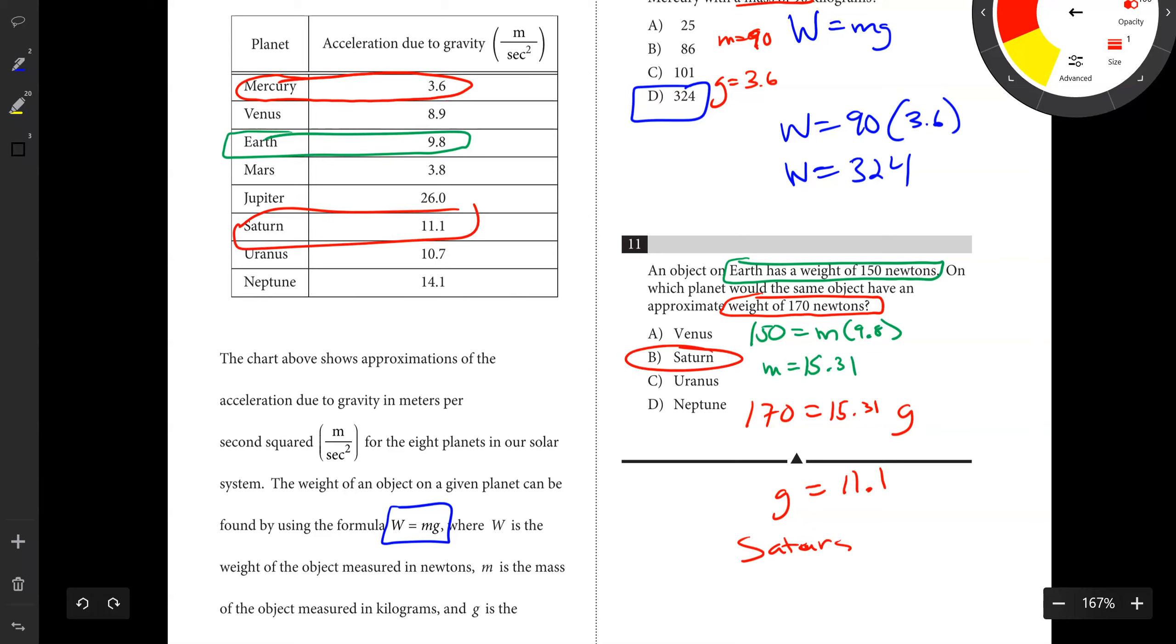Now that we know that is our mass, we can take the weight of 170. So 170 equals 15.31 times our gravity. Our gravity is going to be 11.1 roughly, therefore we're going to be on Saturn. So the answer is Saturn.